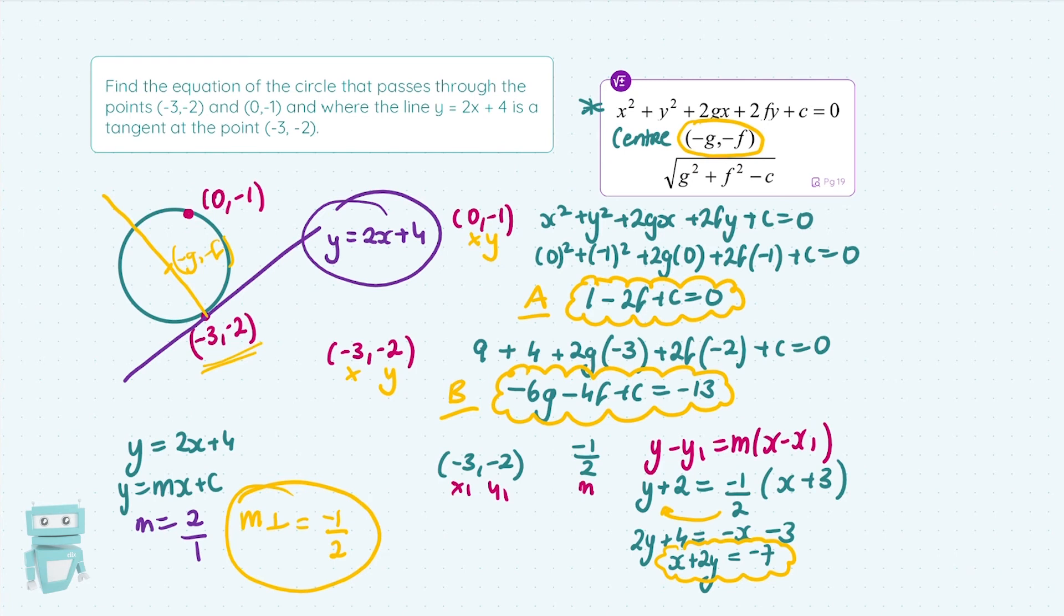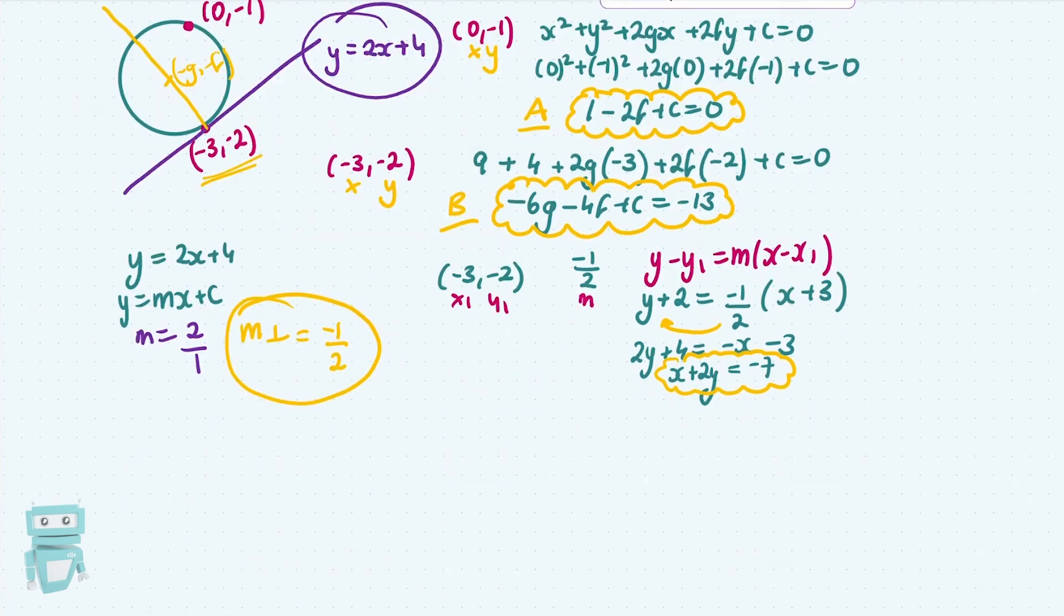Now, the important thing with this line is that it contains the center. And remember, the center is (-G,-F). Label it x and y and then throw it in to this perpendicular equation of a line. Tidy that up for ourselves and that's our third equation. Let's call it equation C.